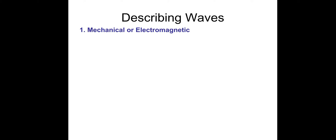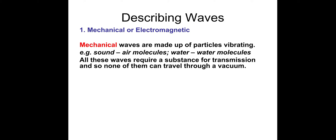Describing waves — mechanical or electromagnetic. Mechanical waves are made up of particles vibrating, for example, sound, which is air molecules, or water, which is the water molecules. All of these waves require a substance for transmission, and so none of them can travel through a vacuum. Remember, a vacuum is empty space — there's nothing there.